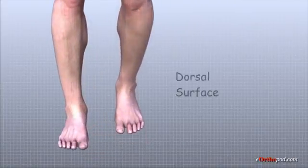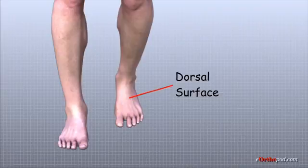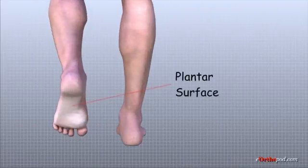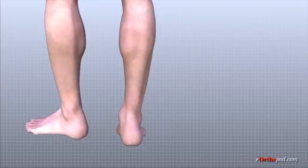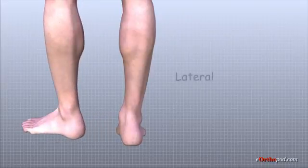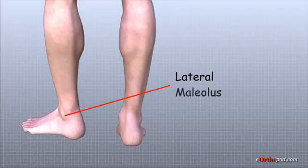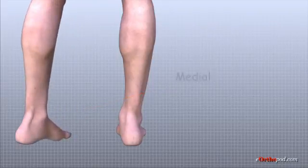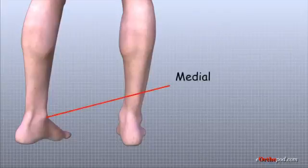The top of the foot is referred to as the dorsal surface. The sole of the foot is the plantar surface. The outside of the ankle is referred to as the lateral side. The bony bump on the lateral side is called the lateral malleolus. The inside of the ankle is referred to as the medial side. The bony bump on the medial side is called the medial malleolus.